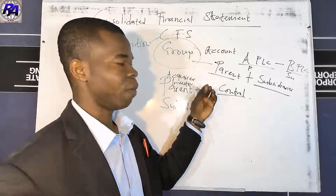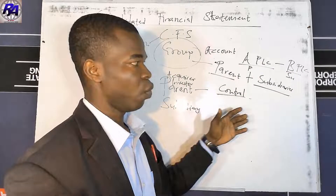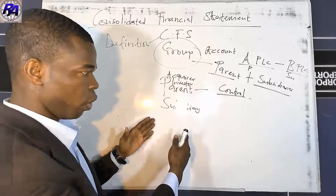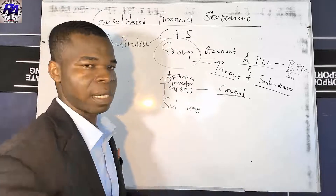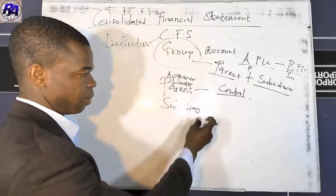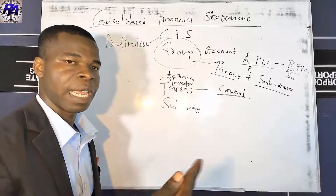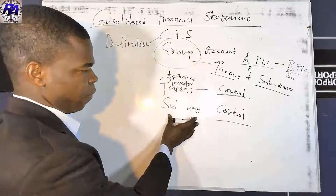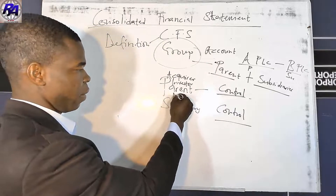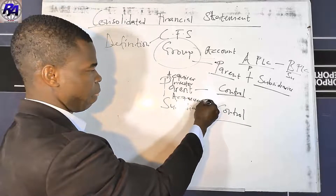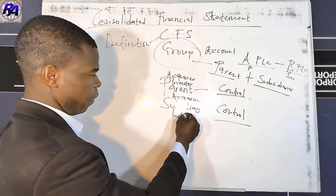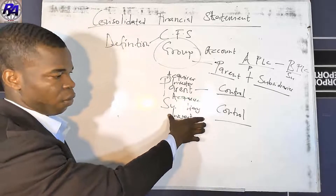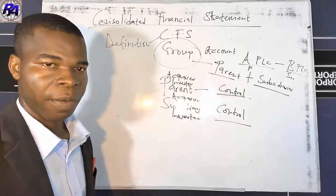Sometimes an entity may not obtain control but may obtain what we call significant influence. We will look at the types of acquisition and the various terms used to describe the parent and the entity being acquired. A subsidiary is essentially an entity controlled by another entity — the keyword again is control. Another name for the subsidiary is the acquiree or the investee.